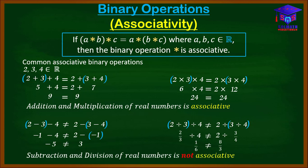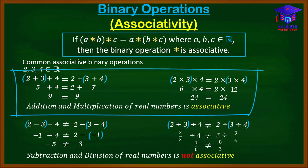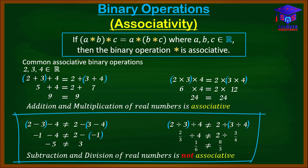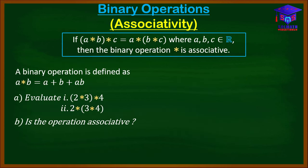As a reminder, addition and multiplication of real numbers are associative because regardless of which two numbers you operate on first, you get the same result. On the other hand, subtraction and division of real numbers are not associative.